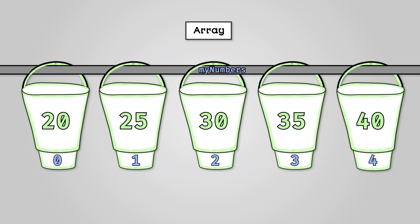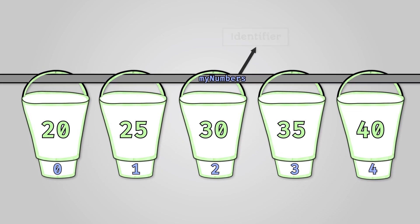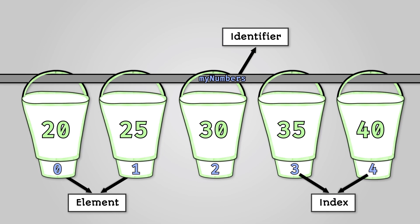Looking at this array there are some key terms you should know. The name on the pole is our identifier. Each bucket in our array is called an element. Each bucket has a number on it starting from zero so we can tell each bucket apart. This number is the index of the array.